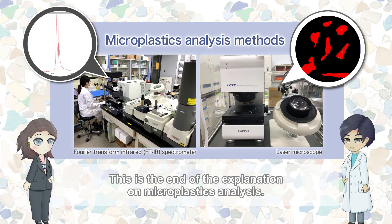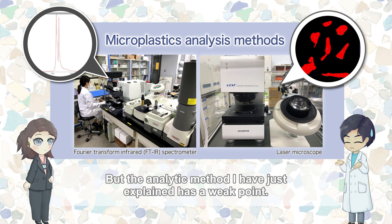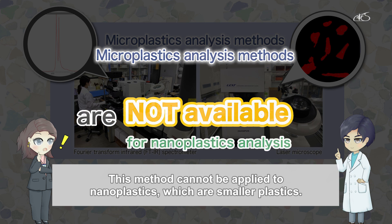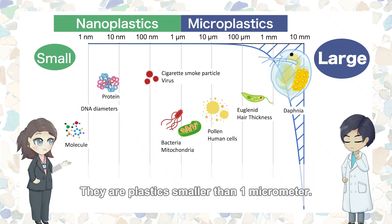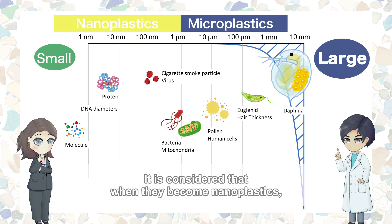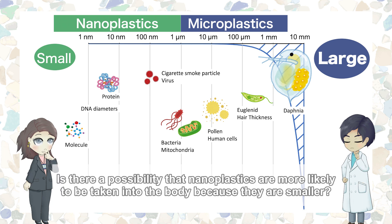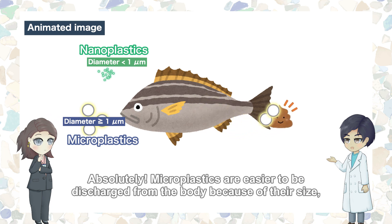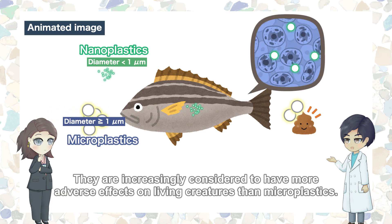This is the end of the explanation on microplastics analysis. It was quite complicated. But the analytic method I have just explained has a weak point — this method cannot be applied to nanoplastics, which are smaller plastics. Nanoplastics were mentioned earlier: they are plastics smaller than one micrometer. Yes, microplastics are known to be fragmented into small pieces by deterioration and become nanoplastics. It is considered that when they become nanoplastics, their adverse effects on living creatures become even stronger. Is there a possibility that nanoplastics are more likely to be taken into the body because they are smaller? Absolutely. Microplastics are easier to be discharged from the body because of their size, while nanoplastics are absorbed into cells. They are increasingly considered to have more adverse effects on living creatures than microplastics.